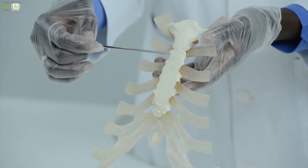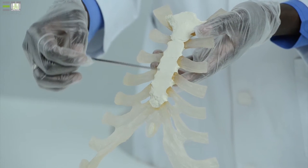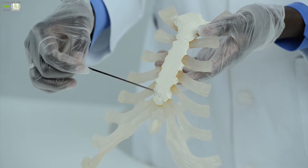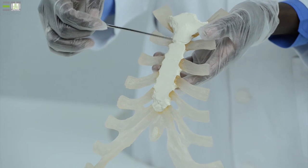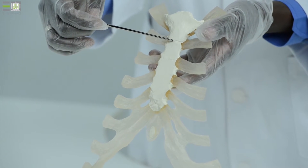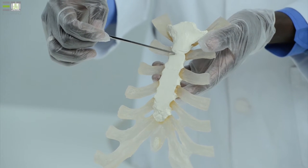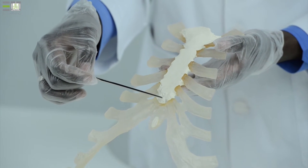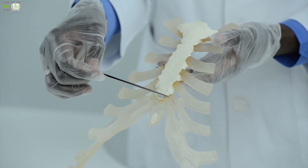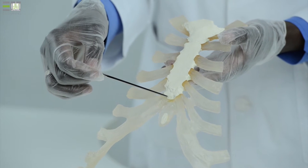The parts of the sternum itself are articulated together by cartilaginous joint, secondary cartilaginous joint. This one, between the manubrium and the body, is called manubriosternal joint, or the angle of Lewis. And inferiorly, between the body and xiphoid process, is called the xiphisternal joint.